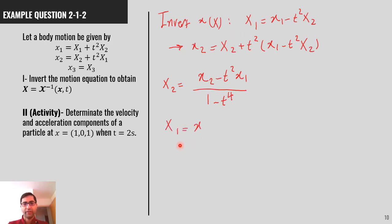So, I can find capital X2 here based on x1 and x2, which gives me this relation. And I replace capital X2 in this relation to get capital X1 as a function of x. So, simplifying the relation, it gives me this final relation. And capital X3 is x3.